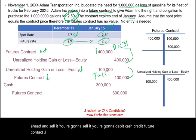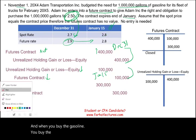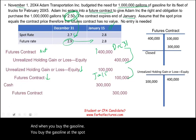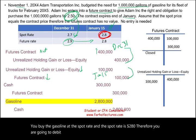Next, you go ahead and buy the gasoline at the spot rate. The spot rate on January 15th is $2.80 per gallon, so for 1 million gallons you debit Gasoline (inventory) $2.8 million and credit Cash $2.8 million.